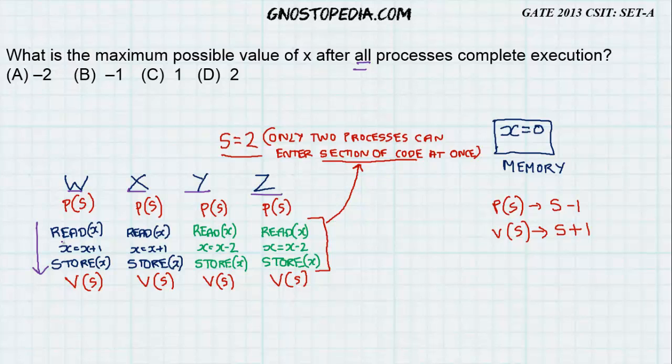So, when the process W reads the small variable x, it will actually store the value of x in a particular register. So, let me draw a box and let me name it as register of W for the time being. Similarly, drawing registers for all the other processes I get.